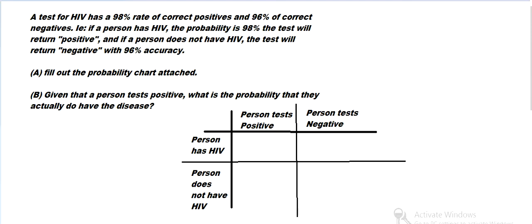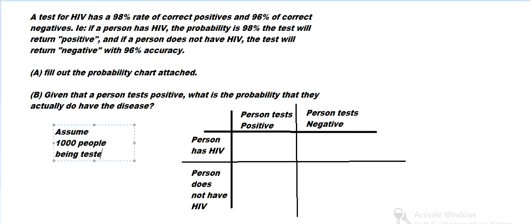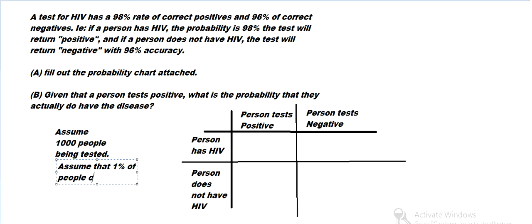We want to fill out a probability chart. We can assume there are 1,000 people being tested — just a concrete number to use. And then we need information about how many people do have HIV, so assume that 1% of people are HIV positive, so that's 10 people.